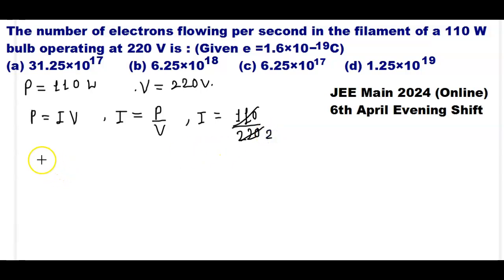This will cancel 2 times. That means the current value will be I is equal to 1 by 2 ampere.